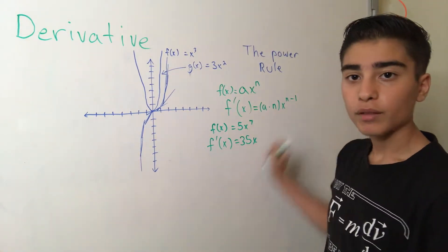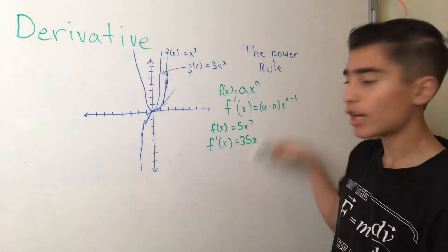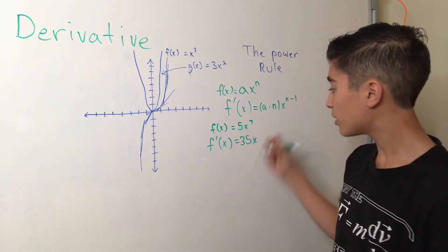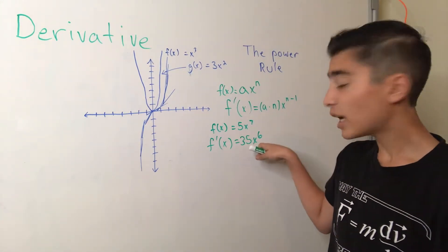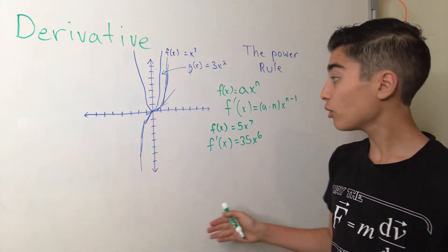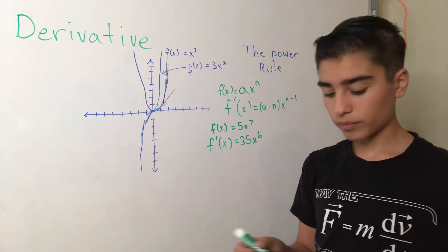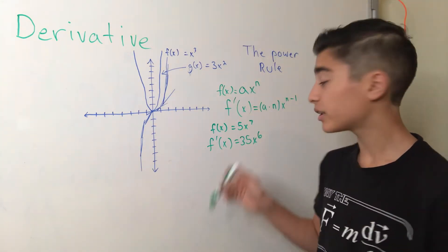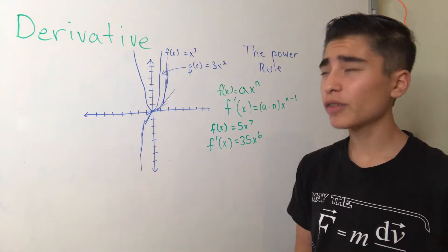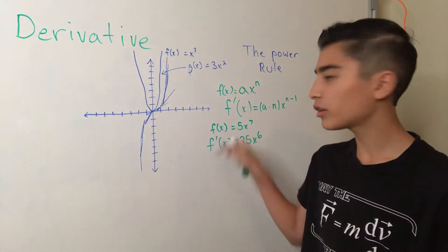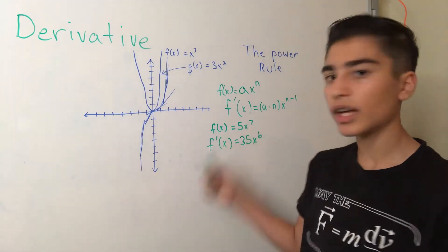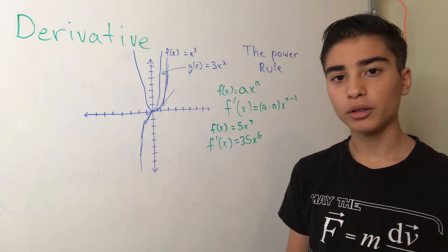And our exponent is n minus 1. Our original n was 7. So, the derivative of our function should be 35 times x to the 6th. The power rule gives us a shortcut to taking the derivative of this function. So, instead of drawing every single line of every single point on this graph and creating a new graph that shows the trends of that graph, we just use the power rule.